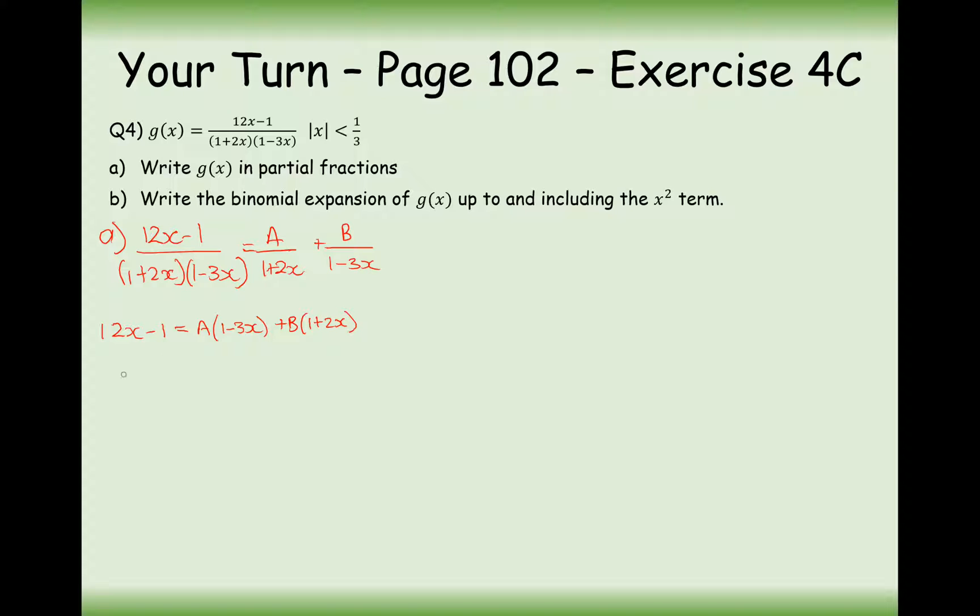So let's start substituting values in now. Let's start substituting in x equals a third. So a third of 12 is 4, 4 minus 1 is 3. That will cancel out this bracket here. And then we need to do 2 thirds plus 1. So 2 over 3 plus 1 will give you 5 thirds. That equals 5 thirds b. So in this case here, b is going to be 9 over 5.